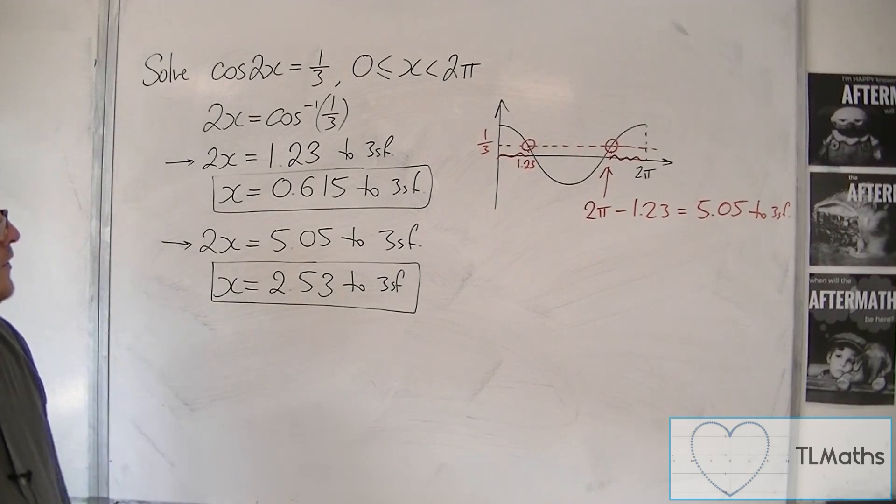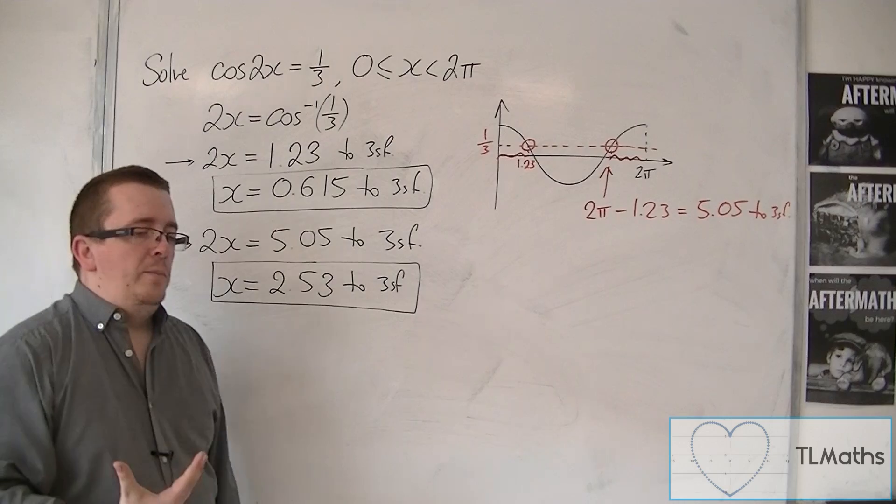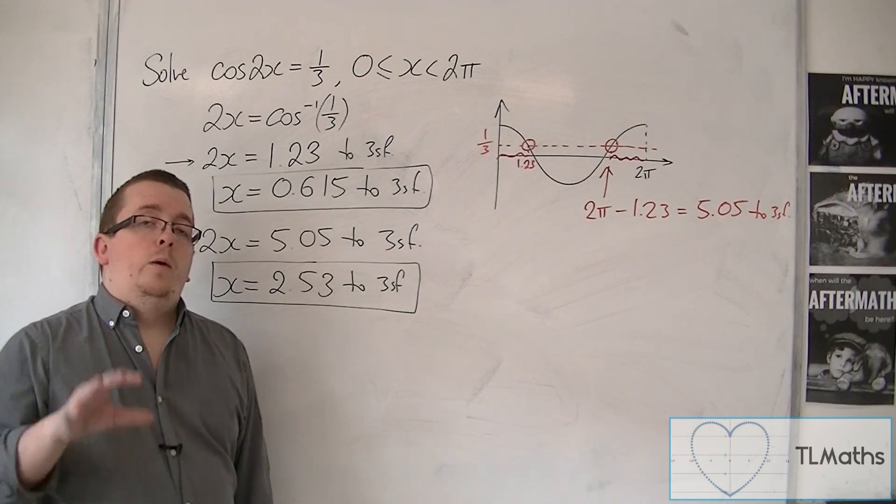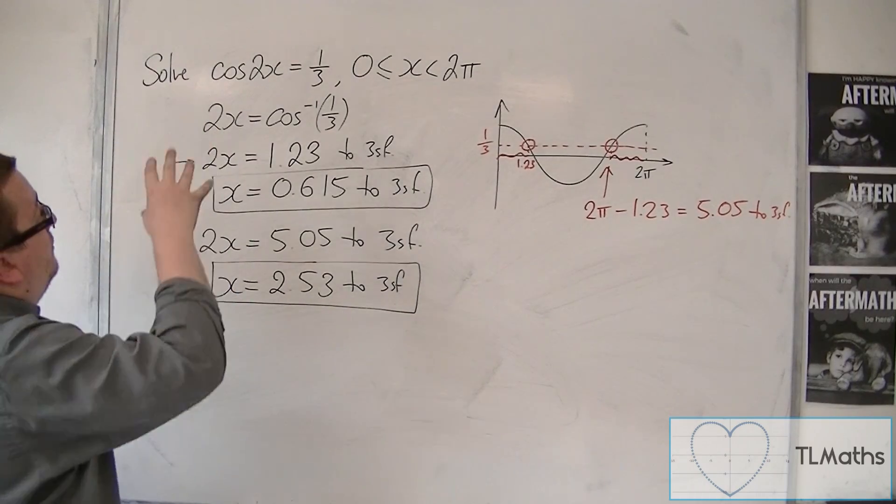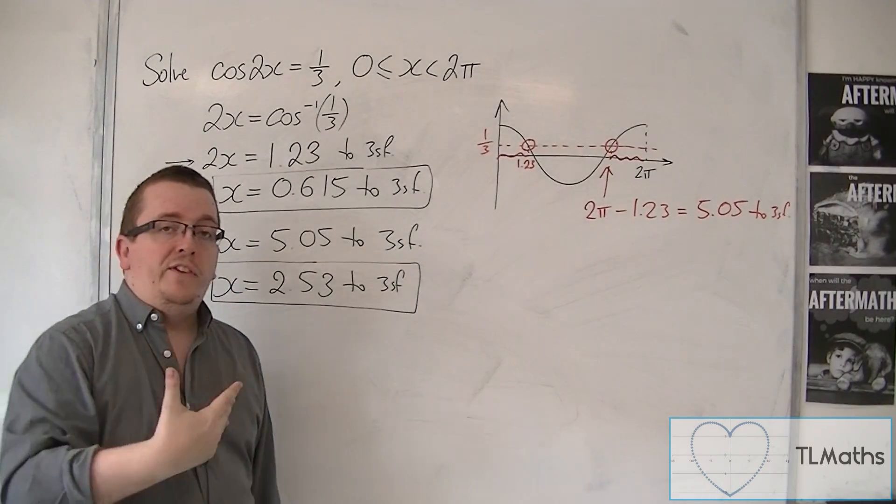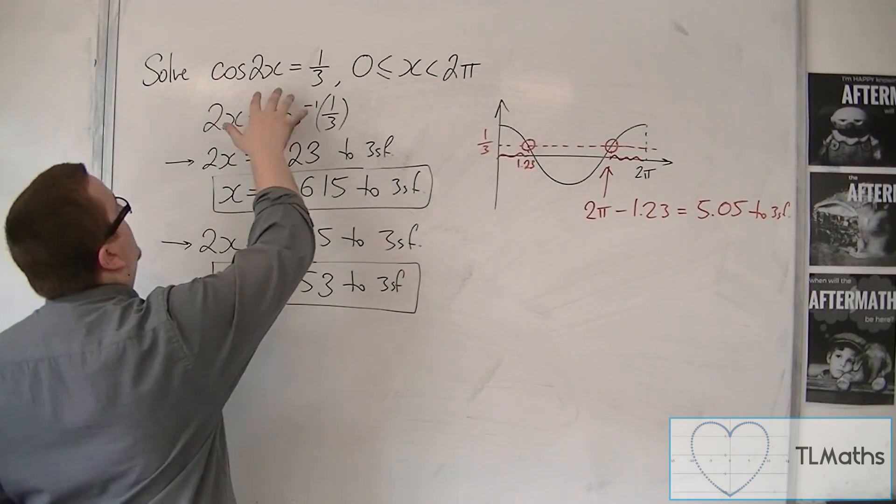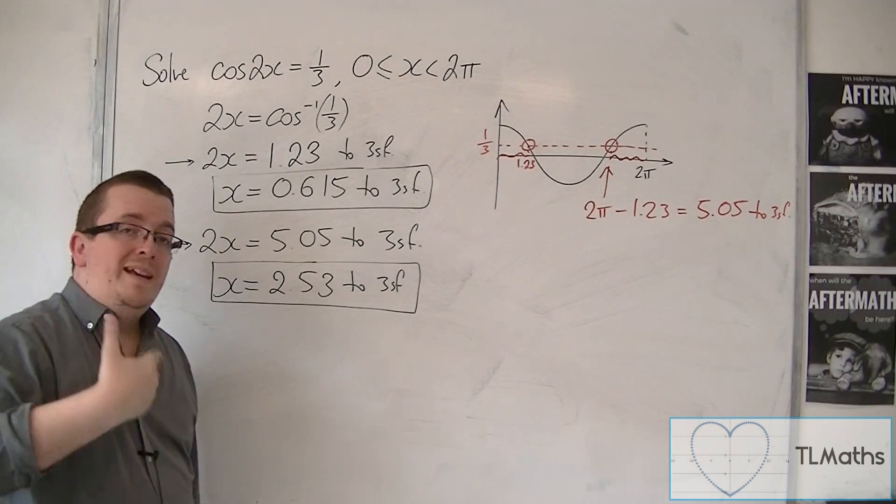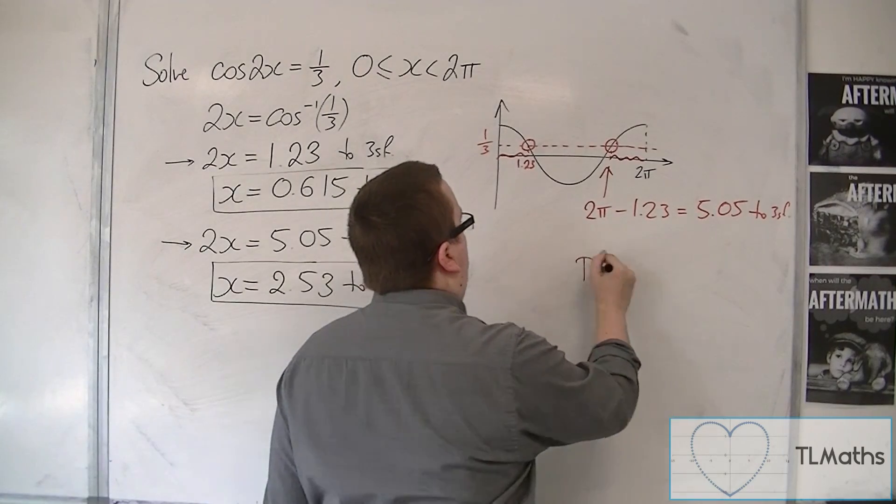And that is another solution. So I now need to ask myself, how many solutions would I expect, and what is the period of this function? So the period of cos of 2x is 360 degrees, or 2 pi rather, 2 pi divided by 2. And so cos of 2x repeats itself every pi. So the period is pi.